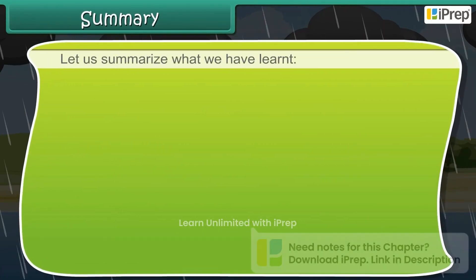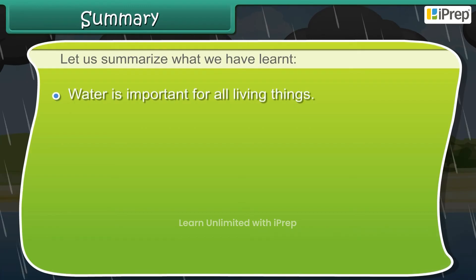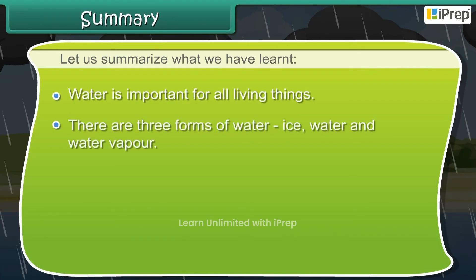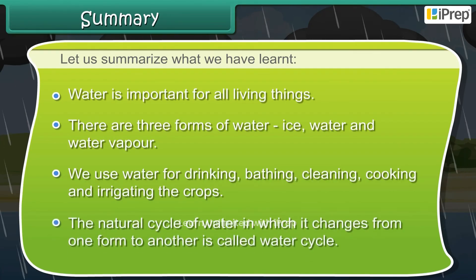Let us summarise what we have learnt. Water is important for all living things. There are three forms of water: ice, water and water vapour. We use water for drinking, bathing, cleaning, cooking and irrigating the crops. The natural cycle of water, in which it changes from one form to another, is called the water cycle.